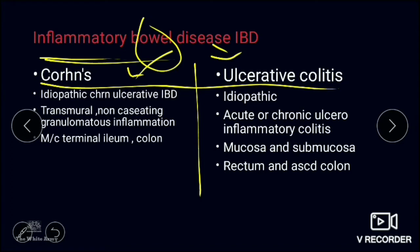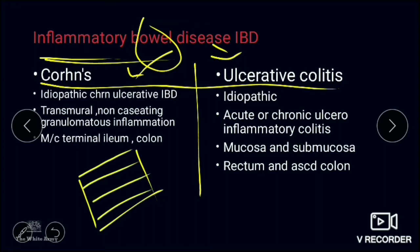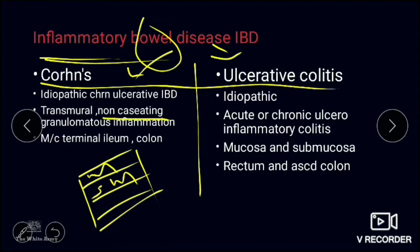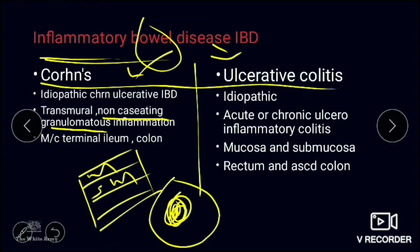Crohn's disease is transmural, meaning it involves all four layers of the colon: mucosa, submucosa, muscular layer, and serosa. The inflammation affects all four layers, and importantly, a non-caseating type of granuloma is seen — meaning there is no caseation or calcification in the centre of the necrosis.